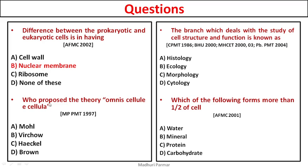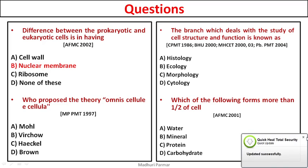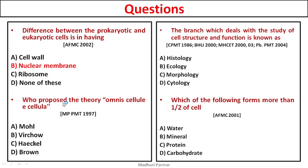Who proposed the theory 'omnis cellula e cellula'? The literal translation of this statement is 'cells arise from pre-existing cells.' The options are Mohl, Virchow, Haeckel, or Brown. The answer is Virchow.